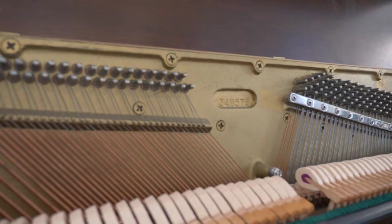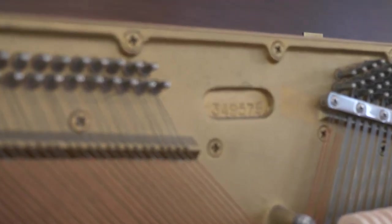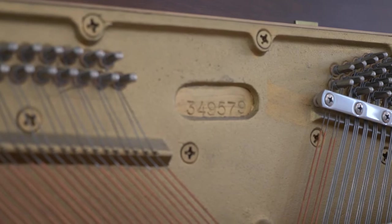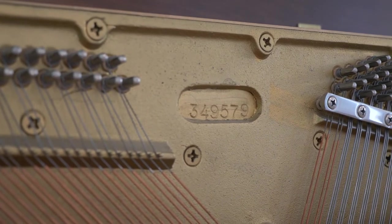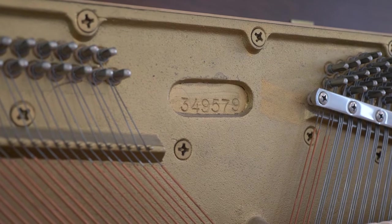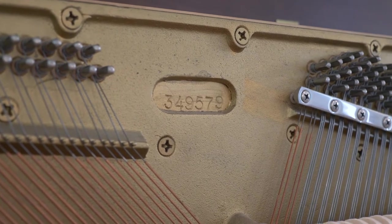So you'll want to find the serial number to determine the age of the piano. I'll put some links in the description of some places you can look. You can also just Google piano serial number. Some companies like Yamaha, Kawai, and others have their own websites to check serial numbers and I'll put those links below as well.